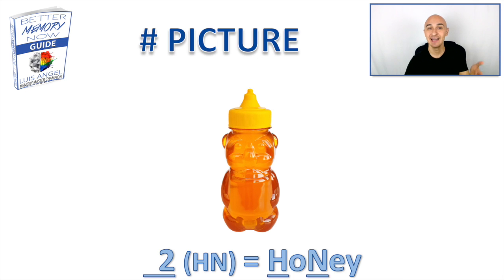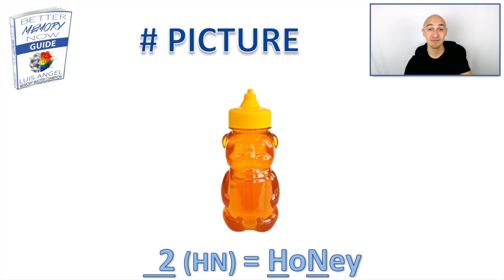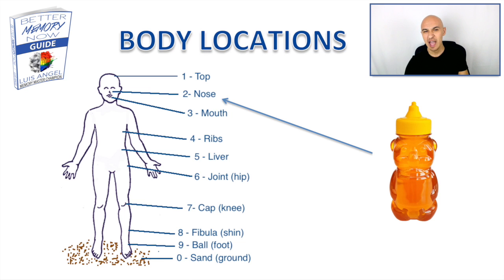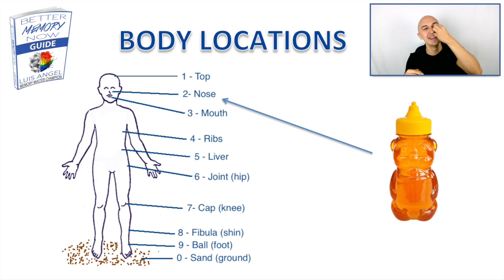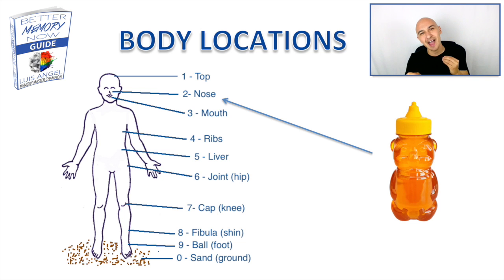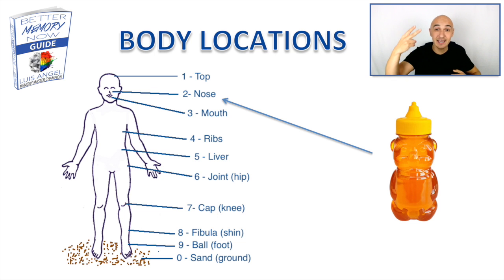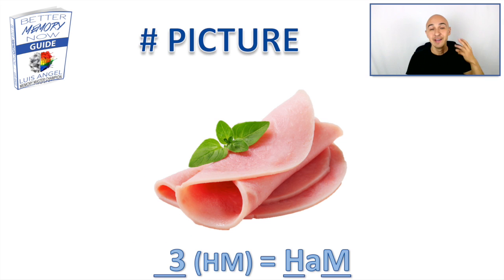Number two is honey. Two has an N sound for nose. With the H at the beginning and some vowels, you get honey for number two. Picture that on your nose — maybe you're squirting honey inside one nostril and honey comes pouring down the other nostril very rapidly.